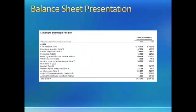Here we have the statement of financial position for General Electric Company. As noted in an earlier module, the statement of financial position is another name for the balance sheet. The second item on the statement of financial position is investment securities, which represents General Electric's investment in marketable securities. If we wanted to learn more about this investment, we would look at note three in the financial statement notes.